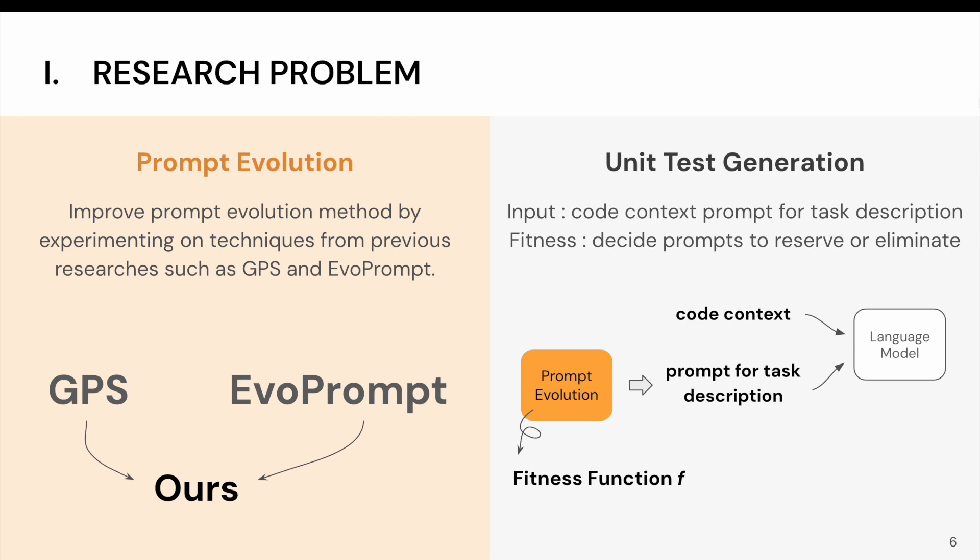We plan to improve the prompt with our prompt evolution method. We also have to design a fitness function, which is the metric function to decide which prompt will be reserved or eliminated at each iteration. We will discuss in detail in the following slides.